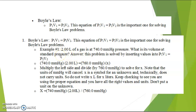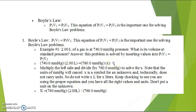They ask for the volume at standard pressure. The standard pressure is 760 mmHg. Then we plug the data into the Boyle's Law formula and we need to find the volume at standard pressure. You can use proportions to find the value of this unknown volume.